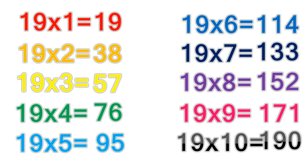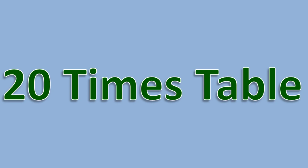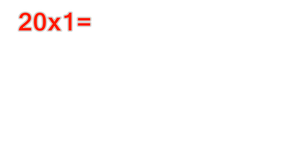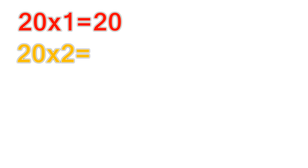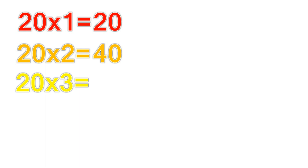20 times table. 20 times 1 equals 20. 20 times 2 equals 40. 20 times 3 equals 60.